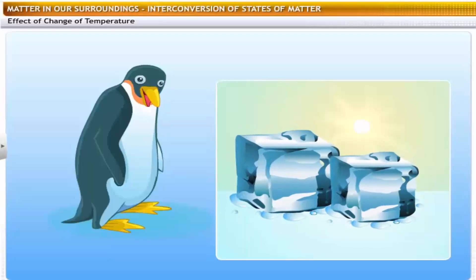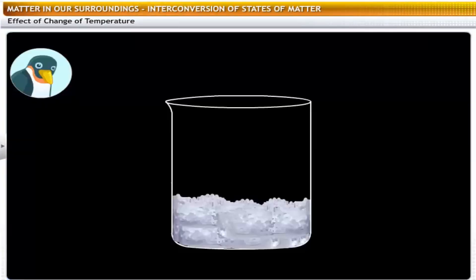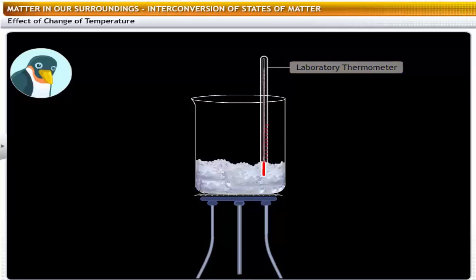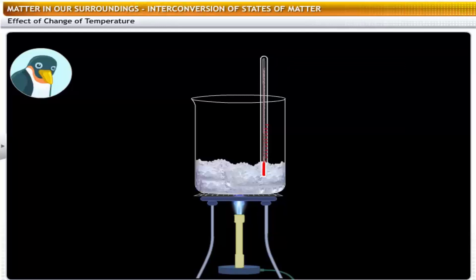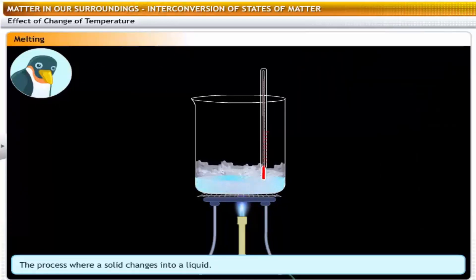I don't understand — why does ice melt on a sunny day? To understand the melting of ice, let's perform an experiment. Take about 150 grams of crushed ice in a beaker and place it on a tripod. Next, suspend a laboratory thermometer into the ice in the beaker. Then, heat the beaker with a Bunsen burner. Remember to note down the reading of the thermometer every half minute. Observe that the temperature shown by the thermometer remains at 0 degrees centigrade till all the ice melts.